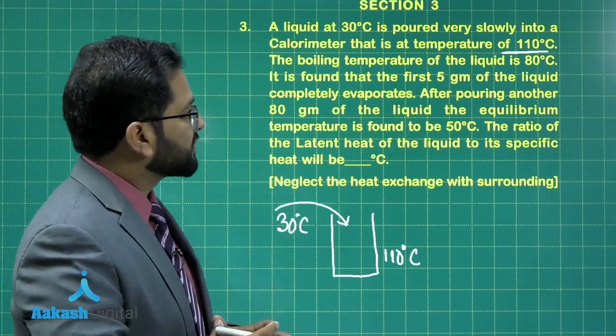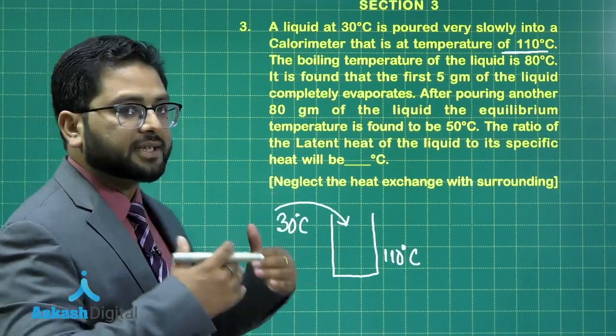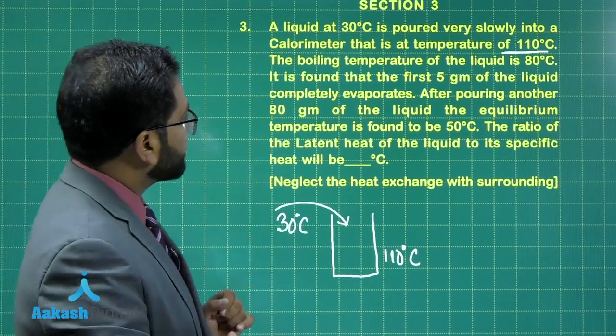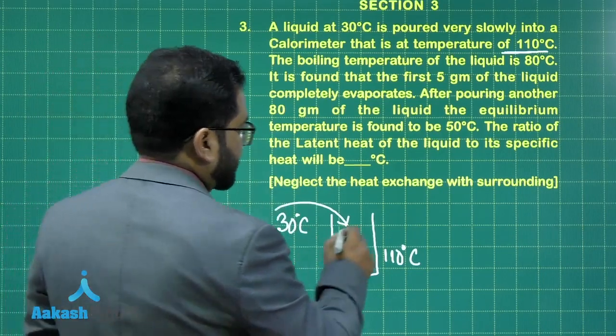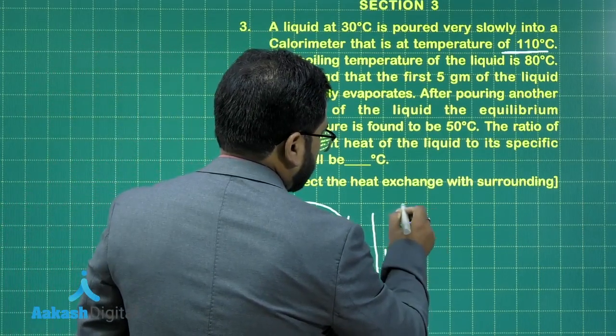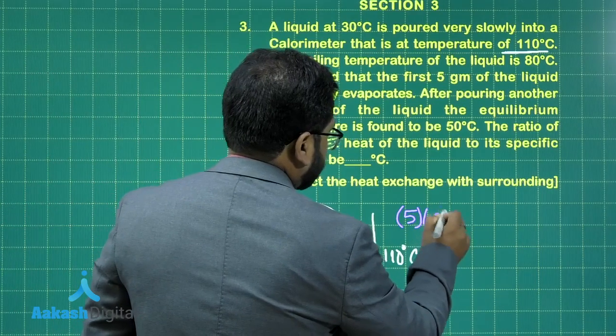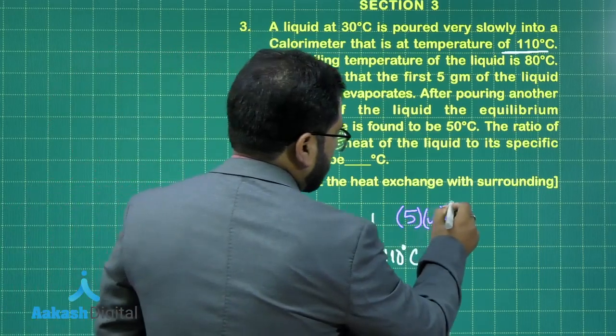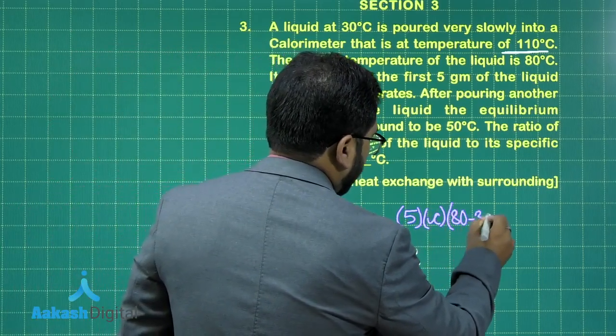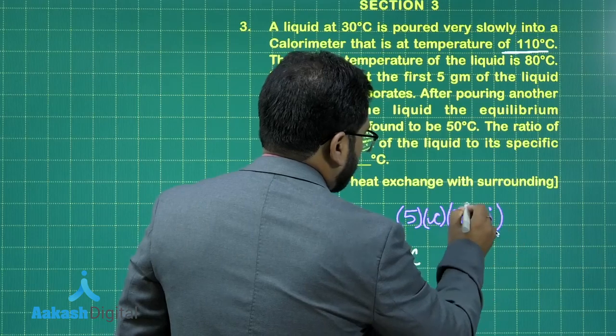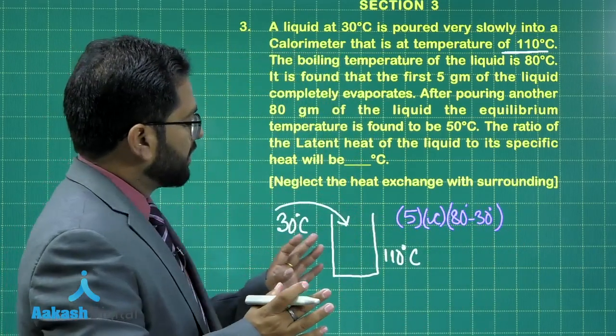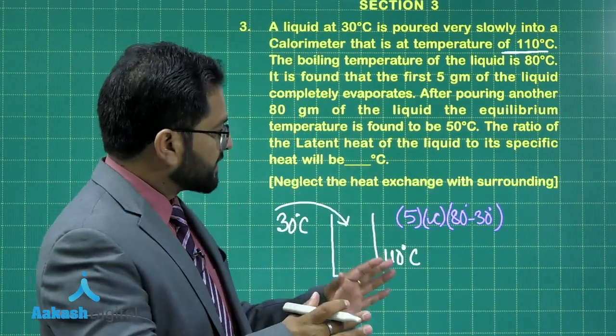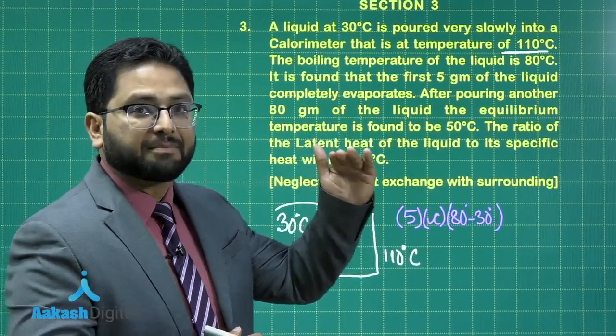Just consider the first 5 grams of the liquid that has completely evaporated. And just note the boiling temperature is 80 degrees. So for the first 5 grams, M into C which is the specific heat of the liquid. Initially it's at 30 degrees, so it will go from 80 minus 30. Why 80? 80 is the boiling temperature of the liquid. And the temperature of the liquid cannot go beyond 80 degrees because that's the boiling point which clamps the temperature.